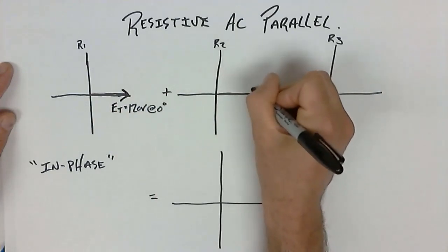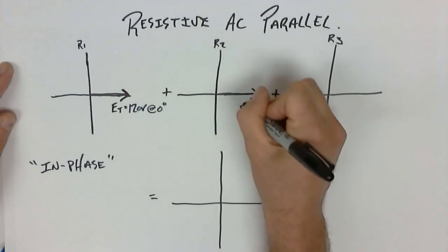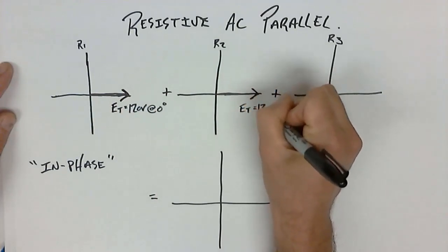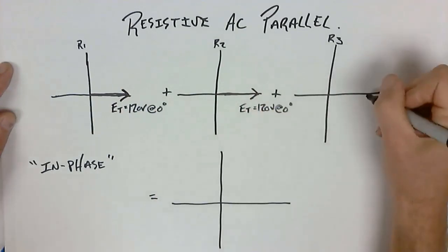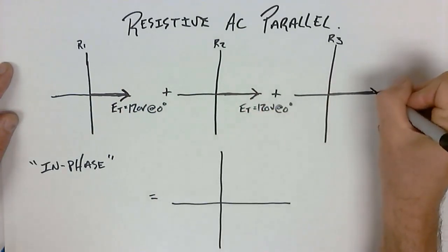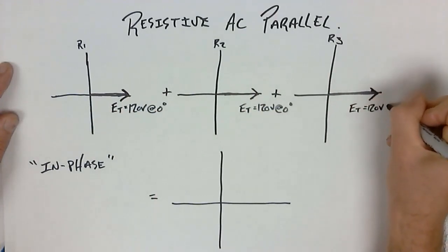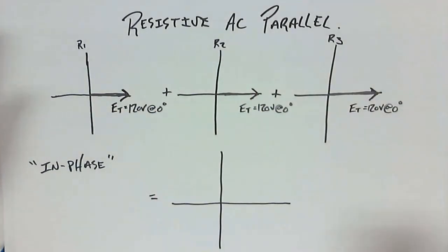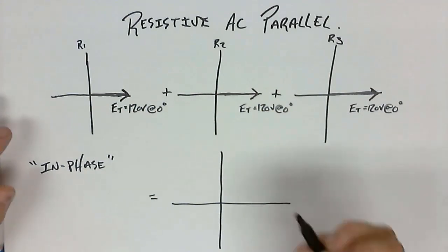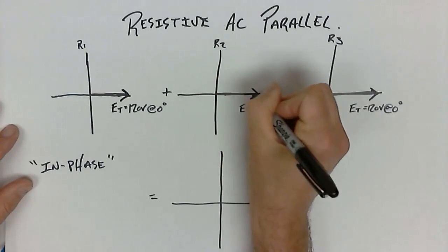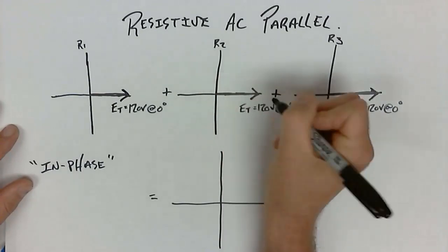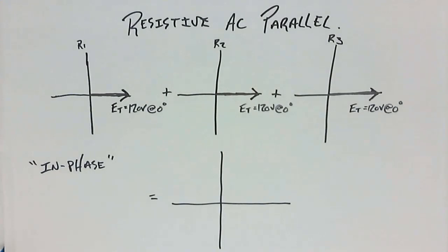There's 120 volts at zero degrees for each branch, and E total is 120 volts at zero degrees. Now, when we sketch the values for this circuit, what we're actually recording that is different is the current — the individual values of current are what we want to sketch.